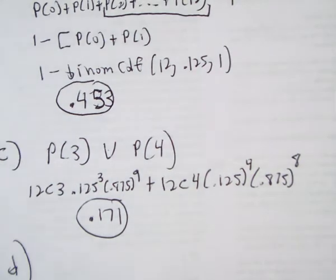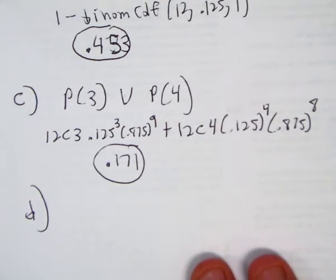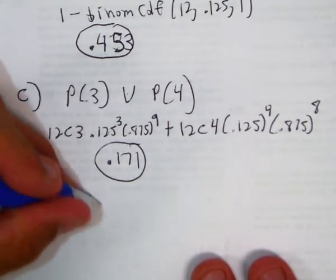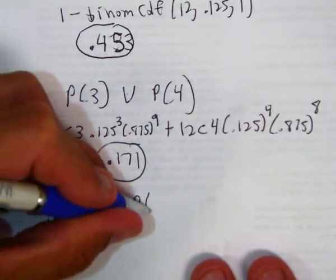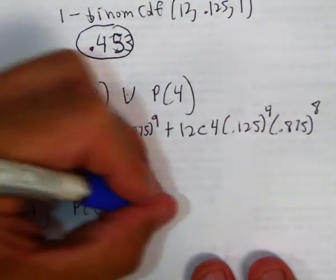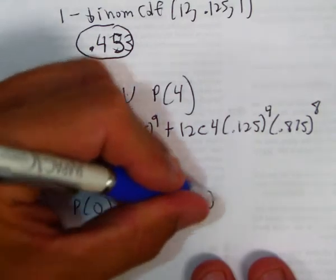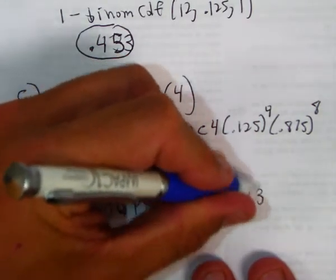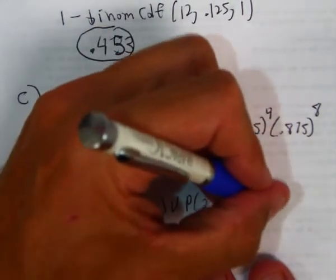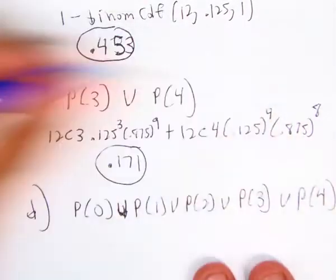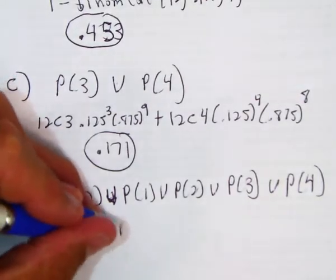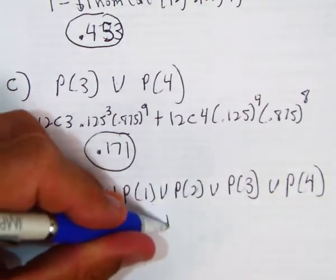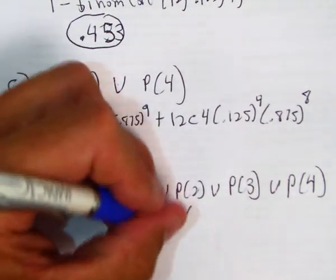Okay. And then D, that one says no more than four frogs. So what does no more than mean? It means the probability of none, one, or two, or three, or four. Well, that's simple. That's binomCDF. So we're just going to do binomCDF.